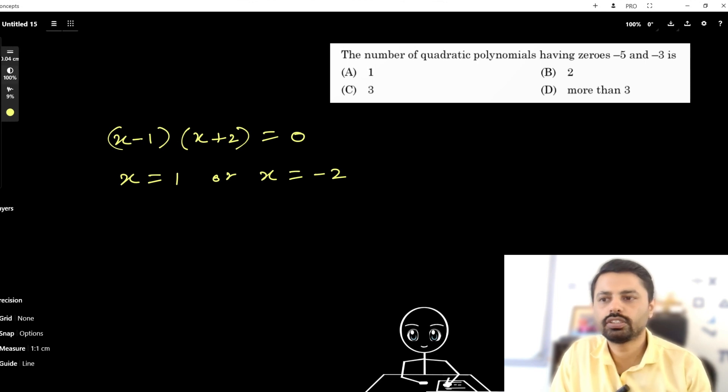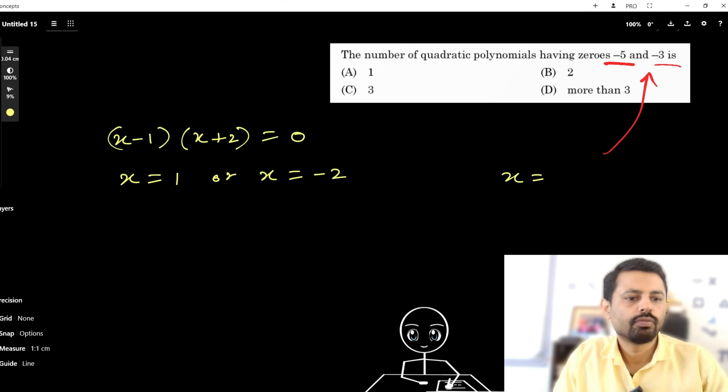And here what they said: zeros are equal to -5 and -3. So in this particular question, x is what? Given: x equals -5 and x equals -3.